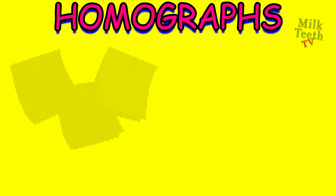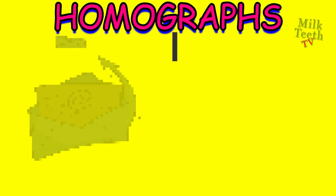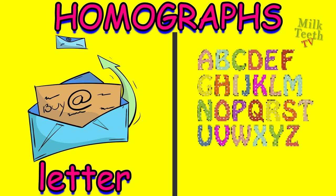Note — it means to write something on paper. And note — this is the currency note. Letter — it is a piece of writing in an envelope. And letters are our alphabets.